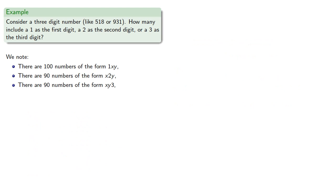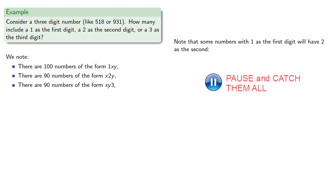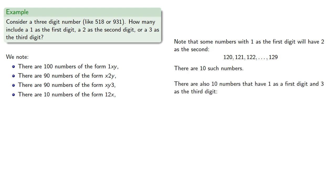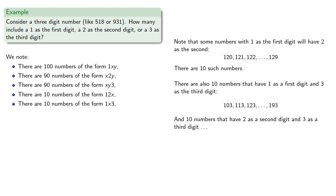Now these sets will count some numbers more than once. Some numbers with 1 as the first digit will also have 2 as the second digit — there are 10 such numbers. There are also 10 numbers that have 1 as the first digit and 3 as the third digit. And 10 numbers that have 2 as the second digit and 3 as the third digit — or are there?